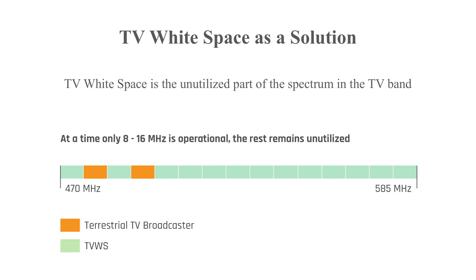In the Indian context, TV white space is in the 470 MHz to 585 MHz range. The only terrestrial TV broadcaster in India is Doordarshan. Our studies have found that they utilize only 8 to 16 MHz. The rest is completely unutilized — it's not being used at a given time. That is the space we have used to provide rural connectivity.